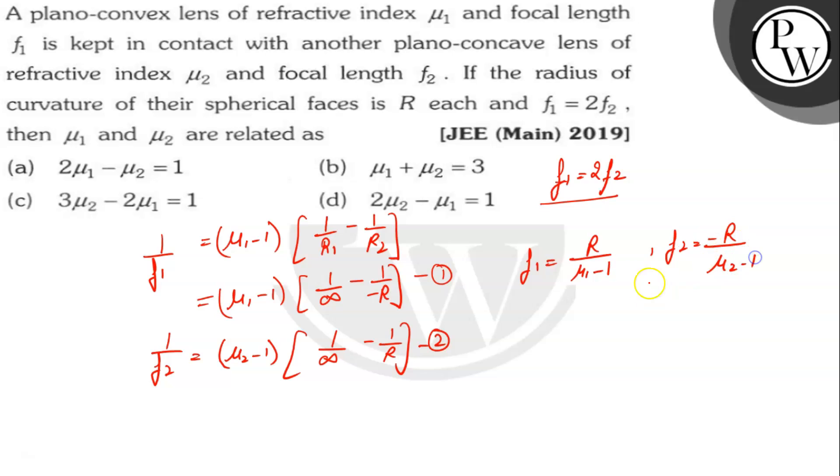We know that f₁ equals twice of f₂, so R/(μ₁ - 1) equals twice R/(μ₂ - 1). So μ₂ - 1 equals twice of (μ₁ - 1), which gives us 2μ₁ - 2. Therefore, 2μ₁ - μ₂ equals 1. So our first option is correct: 2μ₁ - μ₂ = 1.